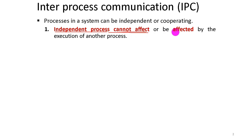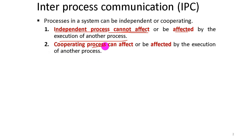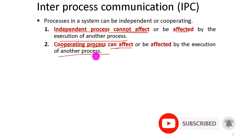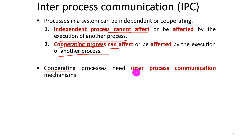If you want to affect other processes, a cooperating process can do so. A cooperating process works in a group and can affect other processes. Because cooperating processes affect each other, they need an Inter-Process Communication mechanism.